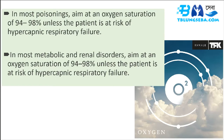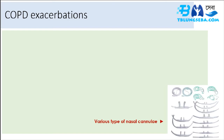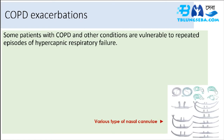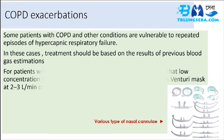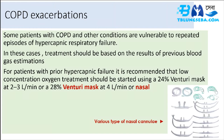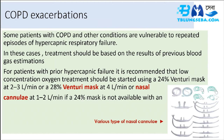Some patients with COPD and other conditions are vulnerable to repeated episodes of hypercapnic respiratory failure. Treatment should be based on results of previous blood gas estimations. For patients with prior hypercapnic failure, low concentration oxygen should be started using a 24% Venturi mask at 2 to 3 L/min, or a 28% Venturi mask at 4 L/min, or nasal cannulae at 1 to 2 L/min if a 24% mask is not available, with an initial target saturation of 88 to 92%.